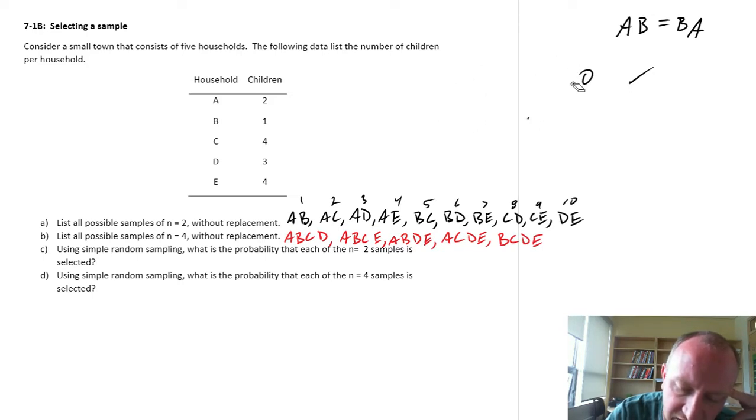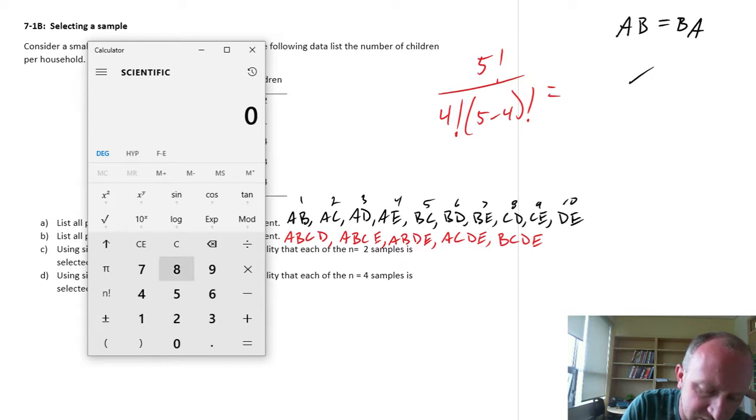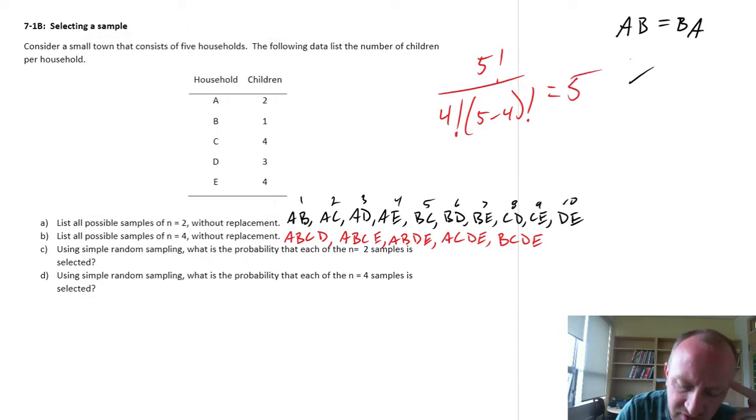We can verify there aren't any missing if we're not sure. This would be 5 factorial over 4 factorial times (5 minus 4) factorial. To make sure we've got all of them, 5 factorial divided by 4 factorial gives us 5. I didn't write out the (5 minus 4) because that's just 1, so it doesn't change anything. We should have 5 and that's how many I found, so we're good.